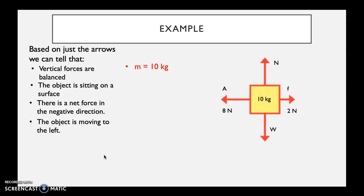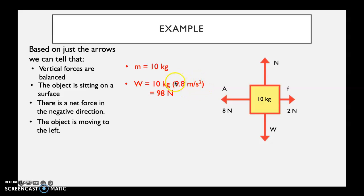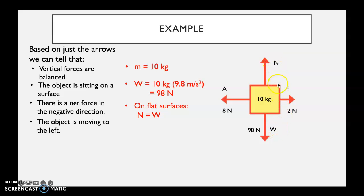The mass is 10 kilograms. Weight is always mass times gravity, so with a mass of 10 kilograms multiplied by 9.8 — gravity on Earth unless told otherwise — the weight of the object is 98 newtons. Since this is on a flat surface and motion is horizontal, the normal force is always equal to the weight, so the normal force is also 98 newtons.